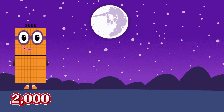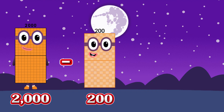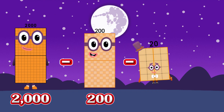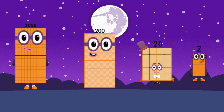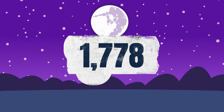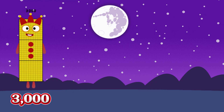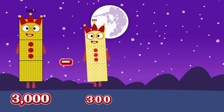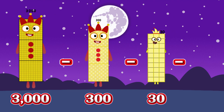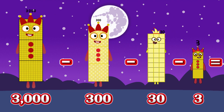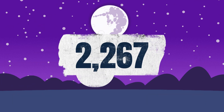2,000 minus 200 minus 20 minus 2 is equals to 1,778. 3,000 minus 300 minus 30 minus 3 is equals to 2,667.